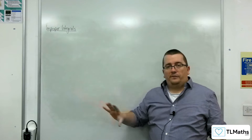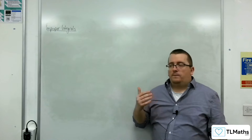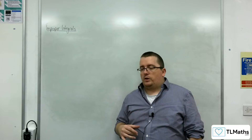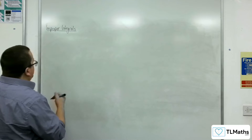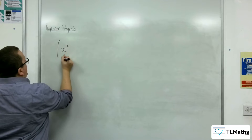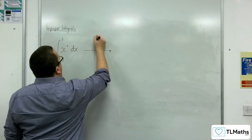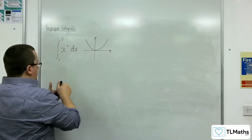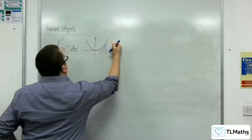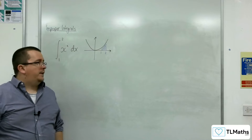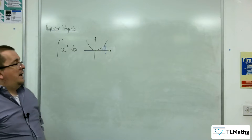First of all, what is an improper integral? What you've been dealing with up to this point in integration are proper integrals. So these are integrals like, for example, 1 over x squared integrated between 1 and 2. Finding that area is perfectly fine — there are no problems with the function between 1 and 2, or at 1 and 2, so it can be evaluated very nicely.